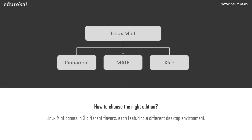If you talk about the editions of Linux Mint, there are three editions. The first is the Cinnamon edition, which is the most modern, innovative, and full-featured desktop version. The second is MATE, which is more stable and a faster desktop version. The third is the XFCE version, which is the most lightweight and the most stable among all three.